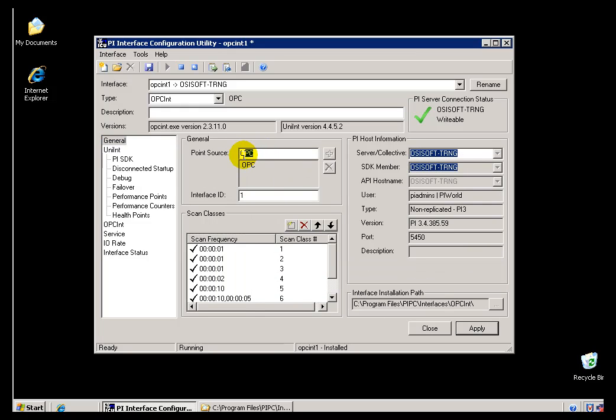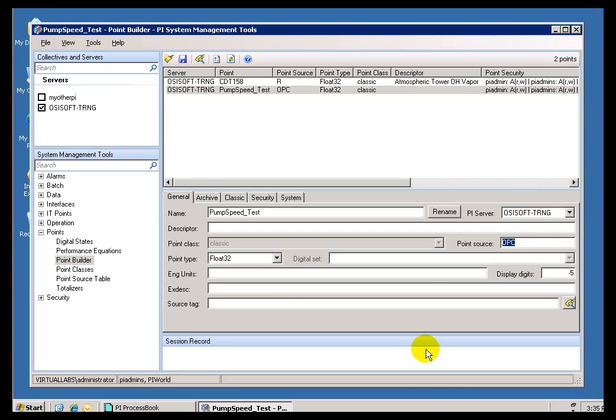First of all, we looked at the OPC, or this Point Source already. The Point Source of OPC here is going to map over to the list of Tags on the Point Database back on the PI Server that have that Point Source of OPC.